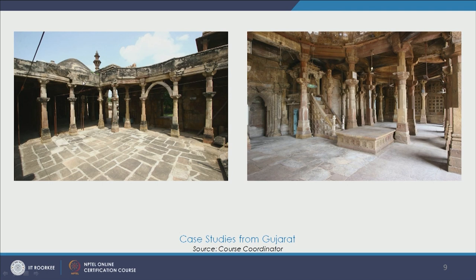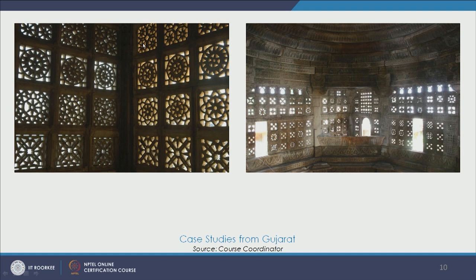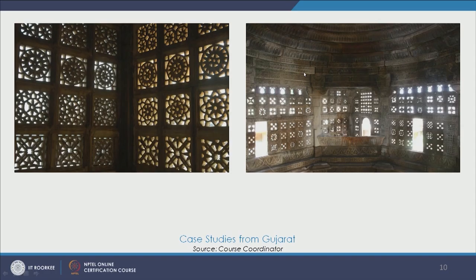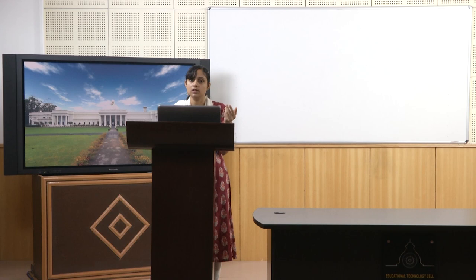Some more pictures of the same mosque show lot of construction details — what is the structural grid from inside, some geometric motifs and carvings. Here we see this stone jali and a beautiful play of light and shadow at different times, with different panels joined together to create this beautiful jali. This is the very famous Siddhi Sayyad ki Jali, which we saw in the case studies from Gujarat in a module specifically focusing on it.